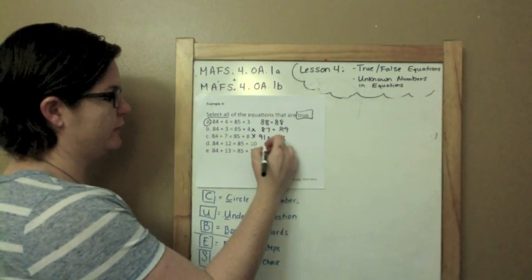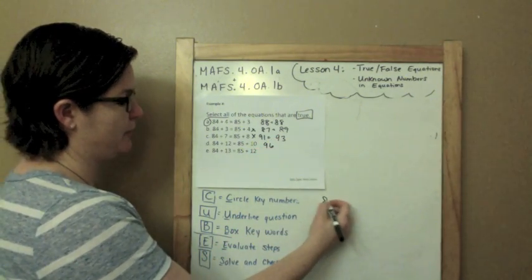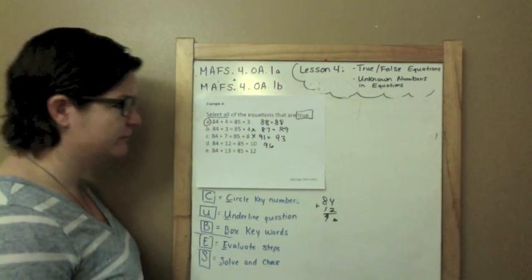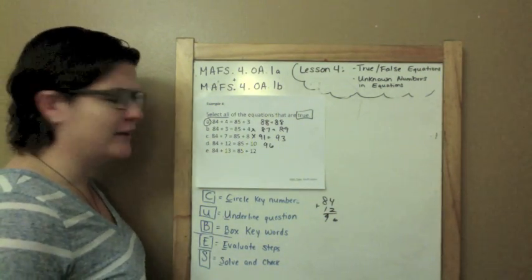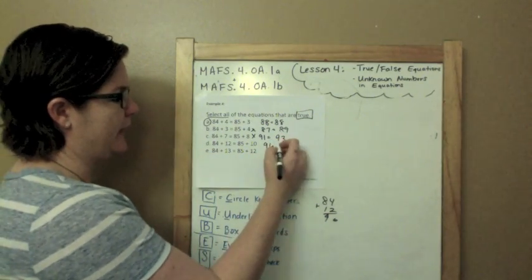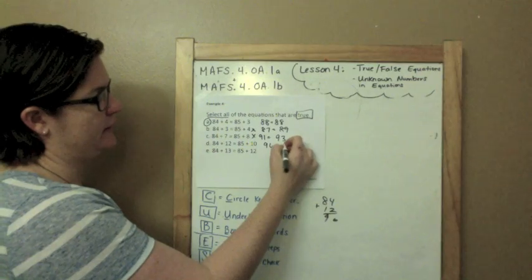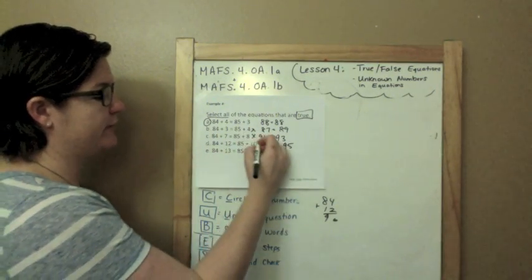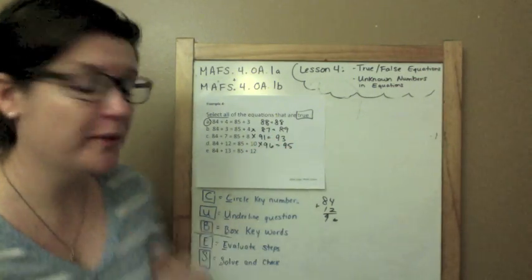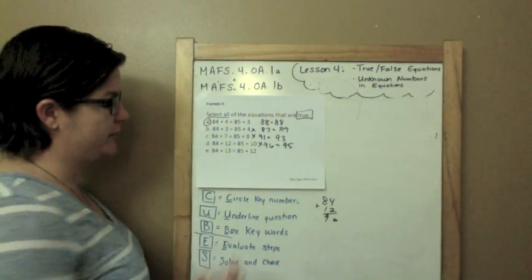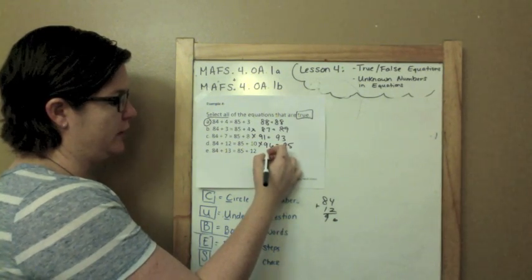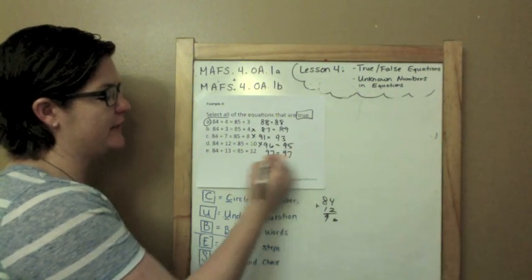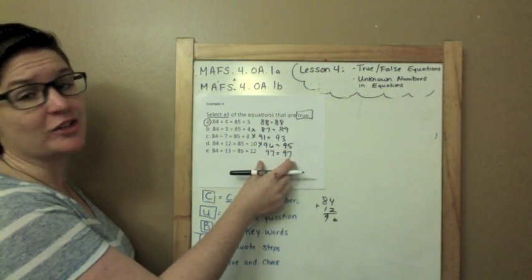84 plus 12 would be 96. And could you be writing this out? Sure you could. And then 85 plus 10 is 95. Is 96 equal to 95? Close, but nope! 84 plus 13 would equal 97. 85 plus 12 would equal 97. It is true!